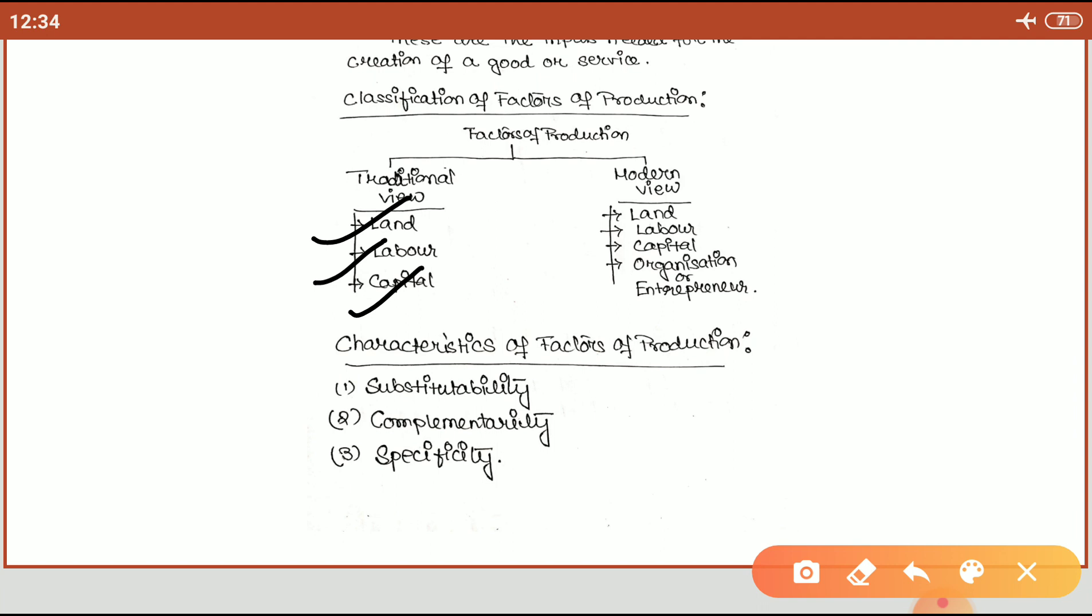The next important part is capital. All kinds of man-made goods which are used in further production of goods and services are defined as capital in economics.